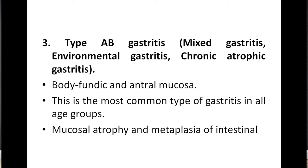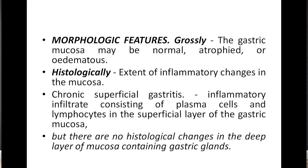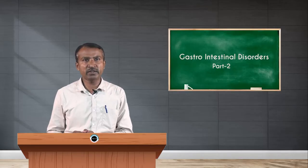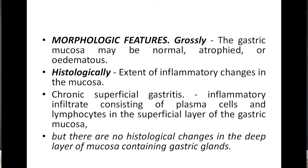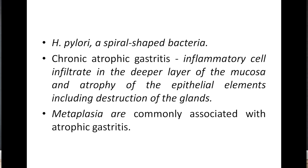Type AB gastritis, also called mixed or environmental gastritis or chronic atrophic gastritis, is commonly seen at the body, fundic, and antral mucosa. It is the most common type of gastritis in all age groups, with mucosal atrophy and intestinal metaplasia. Morphologically, the gastric mucosa may be normal or edematous. Histologically, chronic superficial gastritis shows infiltration of plasma cells and lymphocytes in the superficial layer, with no changes in the deep glandular layer.